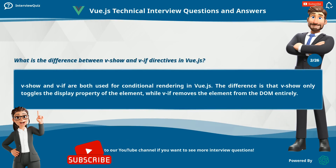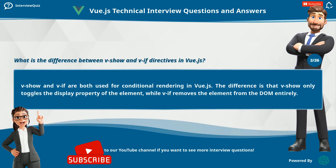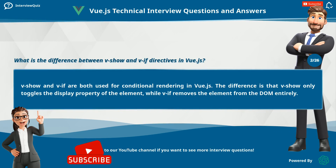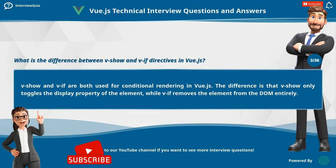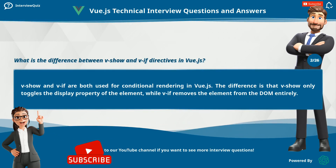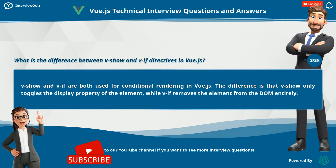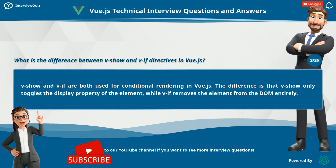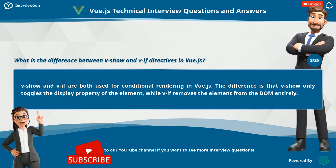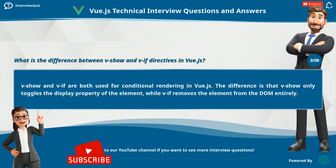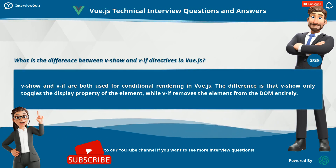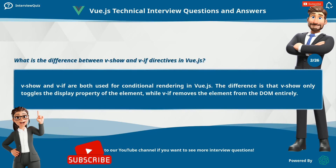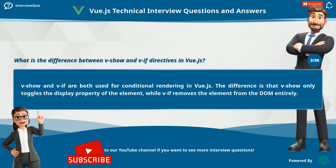What is the difference between v-show and v-if directives in Vue.js? v-show and v-if are both used for conditional rendering in Vue.js. The difference is that v-show only toggles the display property of the element, while v-if removes the element from the DOM entirely.